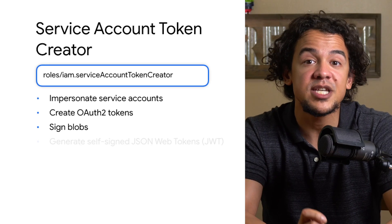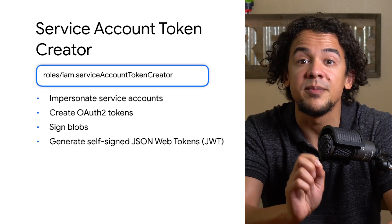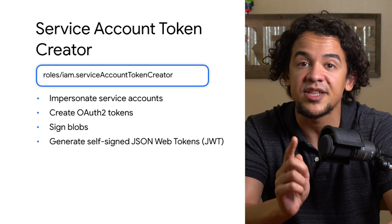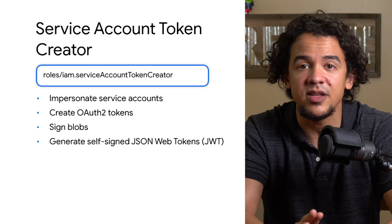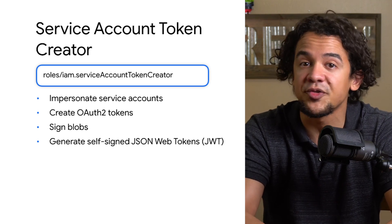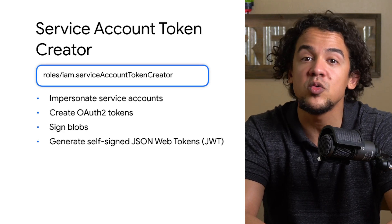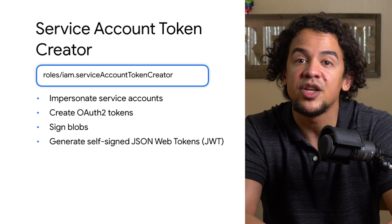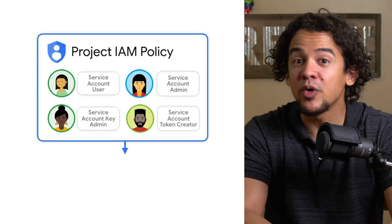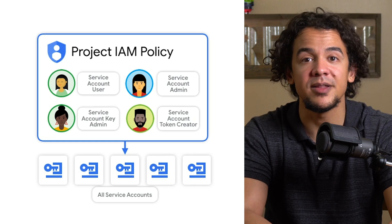Finally, there is the service account token creator. With this role, a user is able to use the impersonate service account flag to run gcloud commands as a specified service account. This kind of impersonation doesn't require the use of any private keys, and is considered a safer alternative. The service account token creator role also lets users create OAuth 2 access tokens, signed blobs, or generate self-signed JSON web tokens. The service account user, admin, key admin, and token creator roles could be granted to any account by adding the binding to a project's IAM policy.